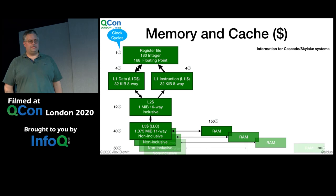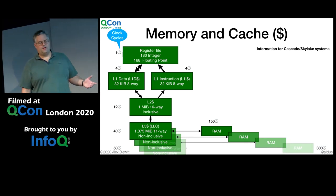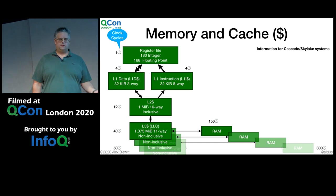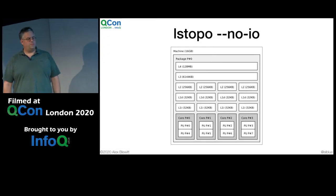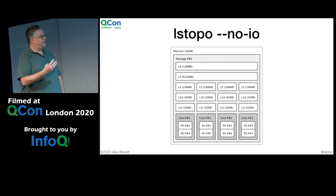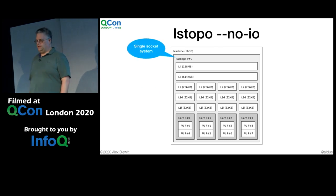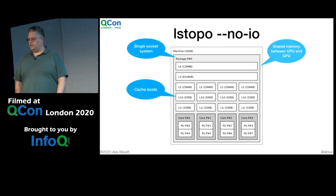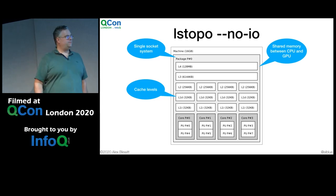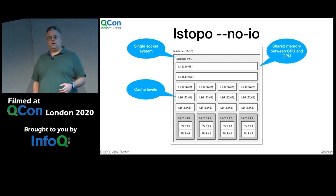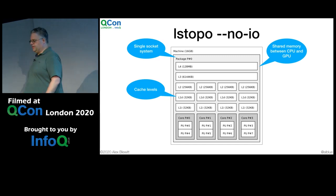DRAM, depending on how far away it is, can be anywhere from 150 to 300 cycles. A program called LSTopo will show you how your computer looks — on my laptop, it's a single-core system with various cache levels, including a level 4 cache that's actually memory shared between the GPU and CPU. We're also seeing non-volatile RAM appearing at level 4. My laptop also shows a four-core processor with hyperthreading.